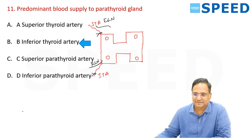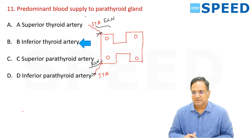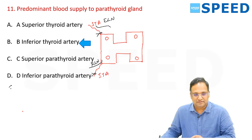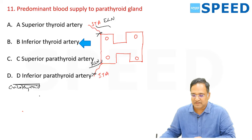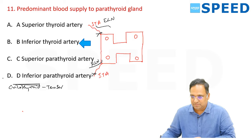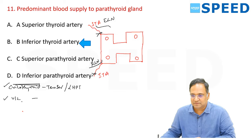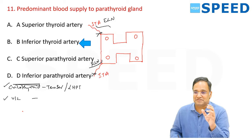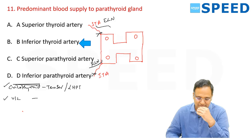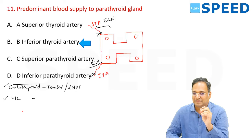External laryngeal nerve supplies the cricothyroid muscle. Injury causes loss of high-pitched tone. All intrinsic muscles of the larynx are supplied by the recurrent laryngeal nerve except cricothyroid, which is supplied by the external laryngeal nerve. Unilateral RLN injury causes hoarseness of voice. The other cord may compensate, so the patient can be asymptomatic. Bilateral RLN injury causes stridor — inspiratory stridor.